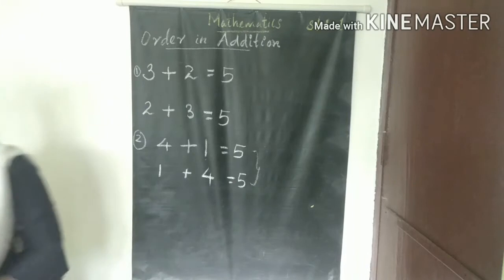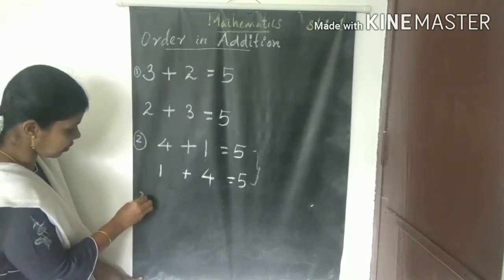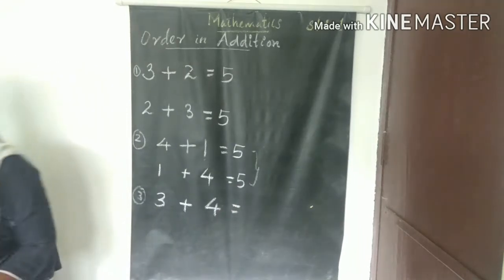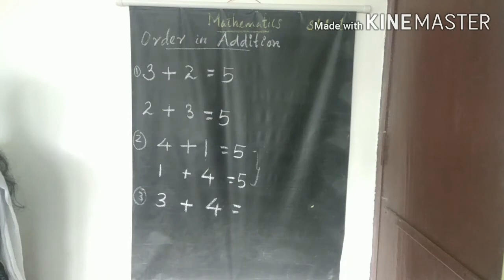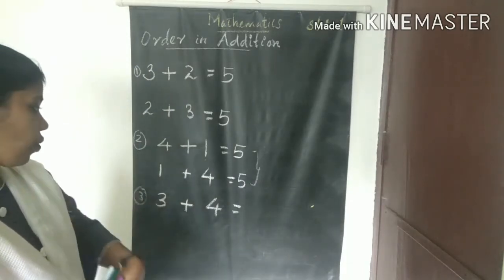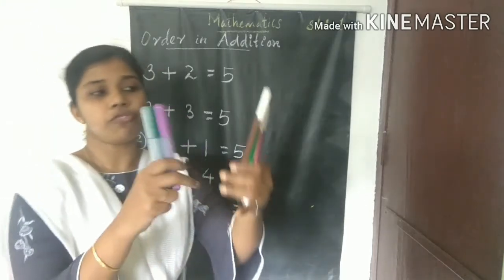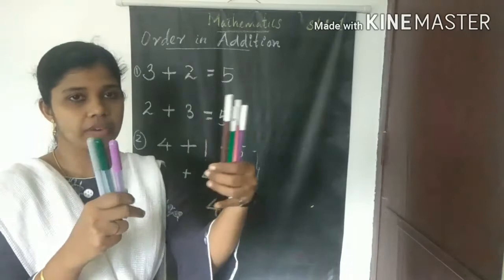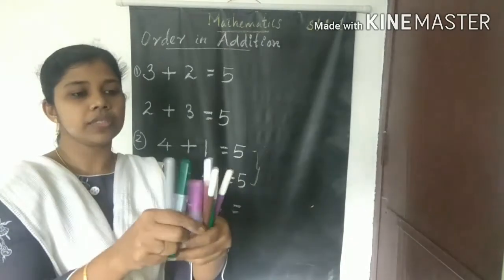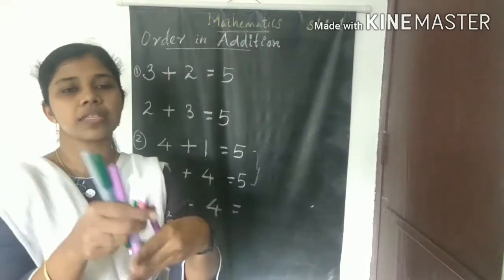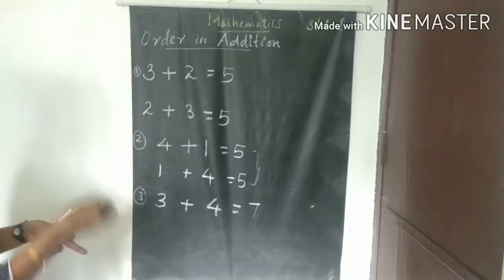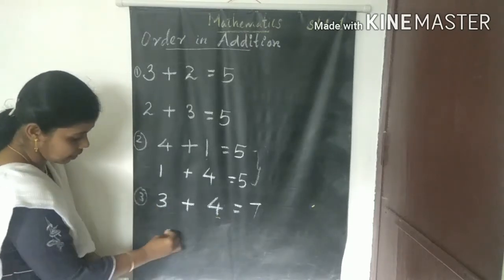That means two numbers added in any order always give the same answer. Now example number three: three plus four. First, take three pens in my right hand, and four pens in my left hand. Three plus four — what is the total number of pens? All taken together, count: one, two, three, four, five, six, seven. So three plus four is equal to seven.